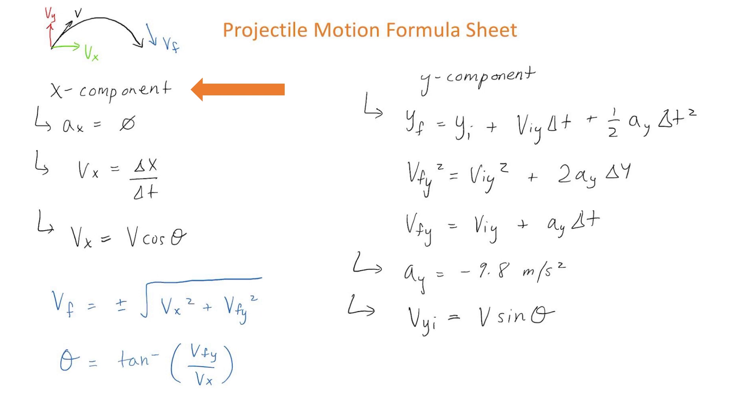The x component is uniform motion, so the acceleration is equal to zero. We can use the uniform motion equation, which says that vx is equal to delta x divided by delta t. And for an object that is thrown up into the air, vx is equal to v cos theta.